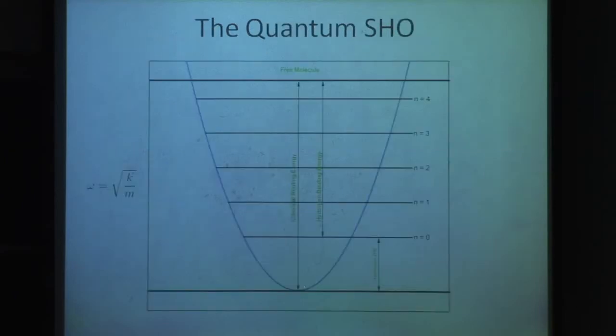For that, we use a very simple three-dimensional simple harmonic oscillator model. Here's a cartoon picture of our energy levels. If you're familiar with the quantum harmonic oscillator in three dimensions, the ground state is 3/2 ℏω, where ω is the classical spring frequency. These energy levels are separated by energy of ℏω.